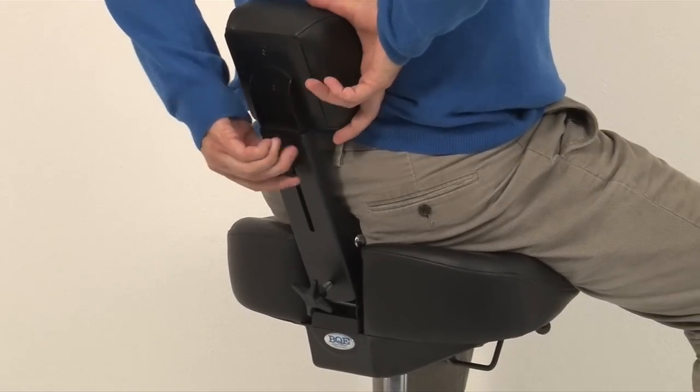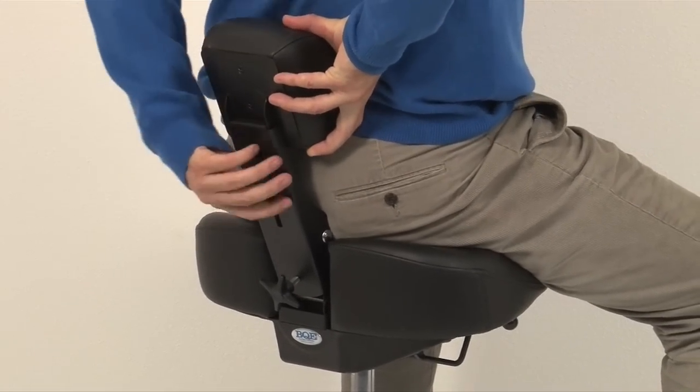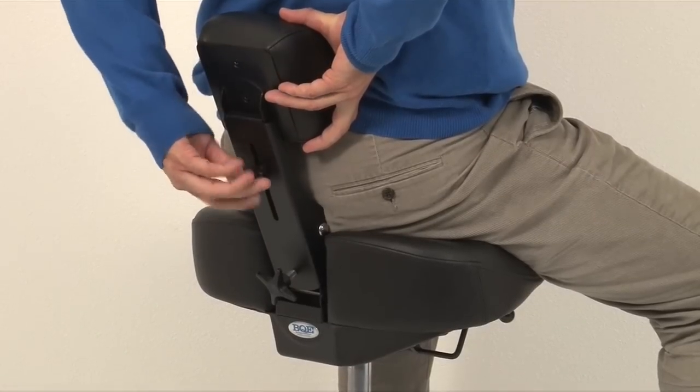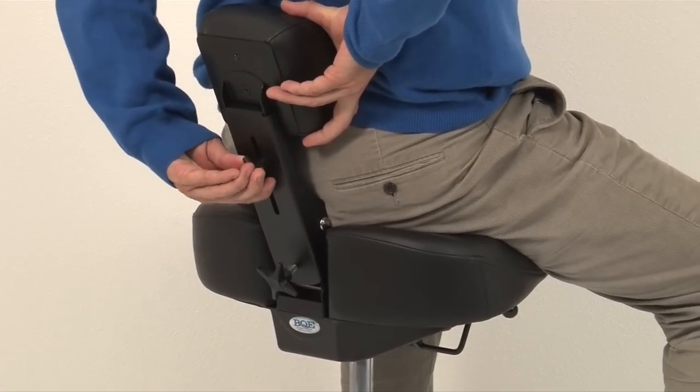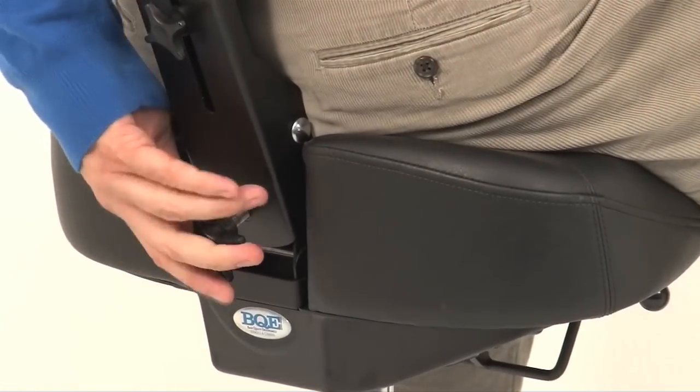You can also adjust the height of the back support with both hands. The middle of the support is positioned at the height of the waist. The other knob increases or decreases support of the lower back.